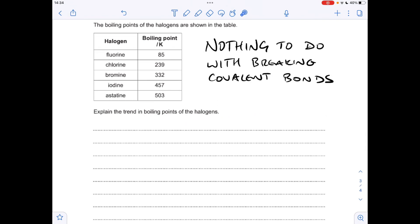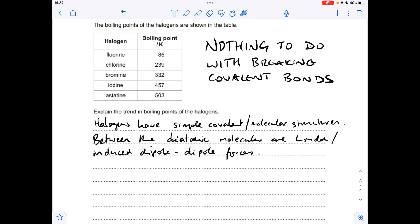Moving on to the next question. So you can see I've written up here nothing to do with breaking covalent bonds. It's the classic wrong answer for this type of question. So we've got to establish the type of structure that we've got in the halogens, so they have simple covalent or simple molecular structures. And between the diatomic halogen molecules, we've got intermolecular forces, and we should really specify the type. So you could either say induced dipole-dipole forces or London forces. So obviously to boil a halogen, you've got to overcome these intermolecular forces.